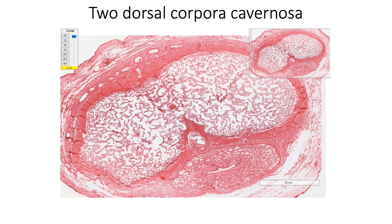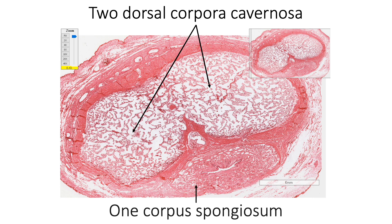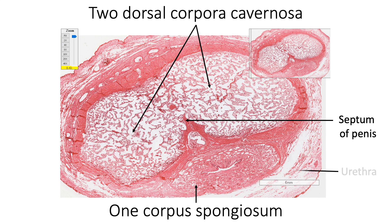Here we are seeing a section of the penis showing a pair of corpora cavernosa dorsally and corpus spongiosum ventrally. The two corpora cavernosa are separated by the septum of penis proximally, but the septum is incomplete in the distal part of the penis as we can see here. We are also seeing the transverse slit-like lumen of the urethra in the corpus spongiosum.